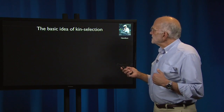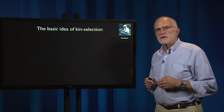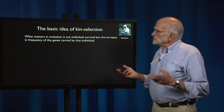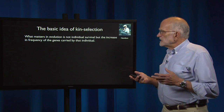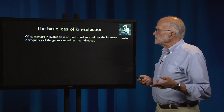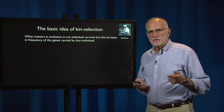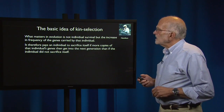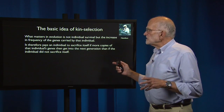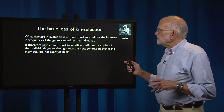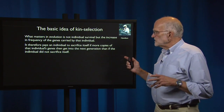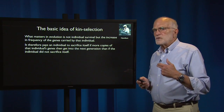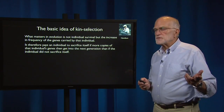The basic idea of kin selection comes from Bill Hamilton, here photographed on the Amazon River, a British evolutionary geneticist. Bill saw that what matters in evolution is not individual survival, but the increase in frequency of the genes that are carried by an individual — an insight he got from Fisher and Haldane and others. It therefore pays an individual to sacrifice itself if more copies of that individual's genes get into the next generation than if that individual did not sacrifice itself. So there can be a conflict between genetic interest and individual survival.